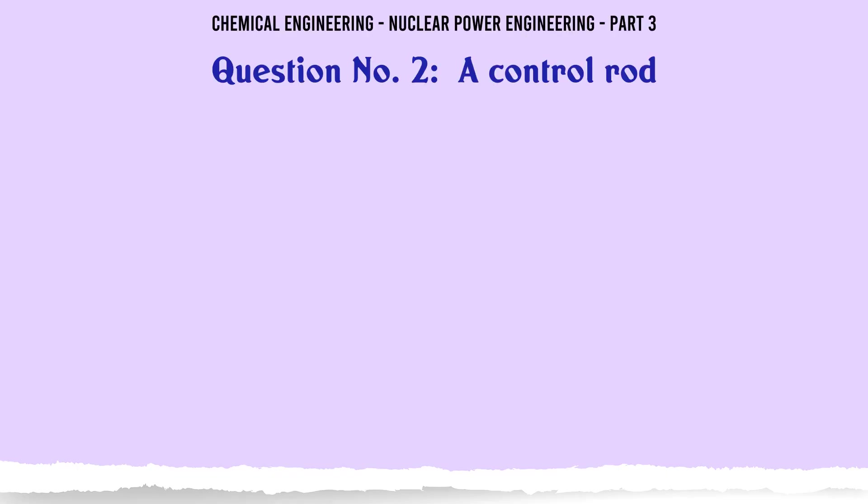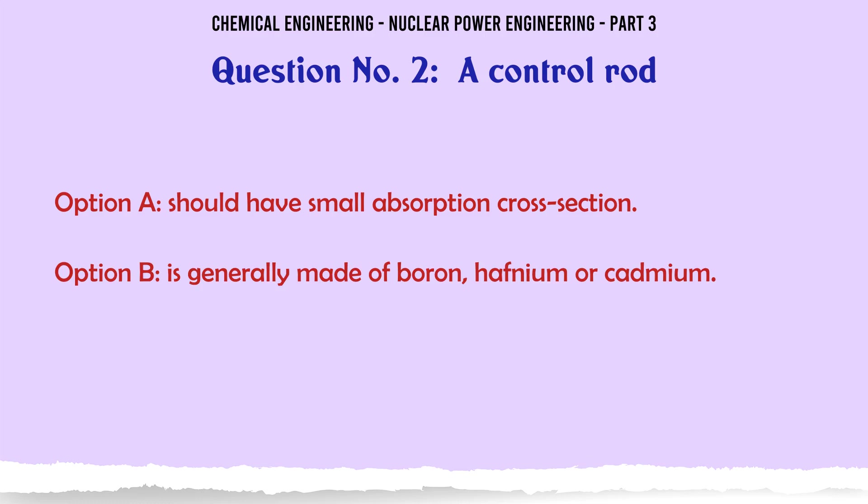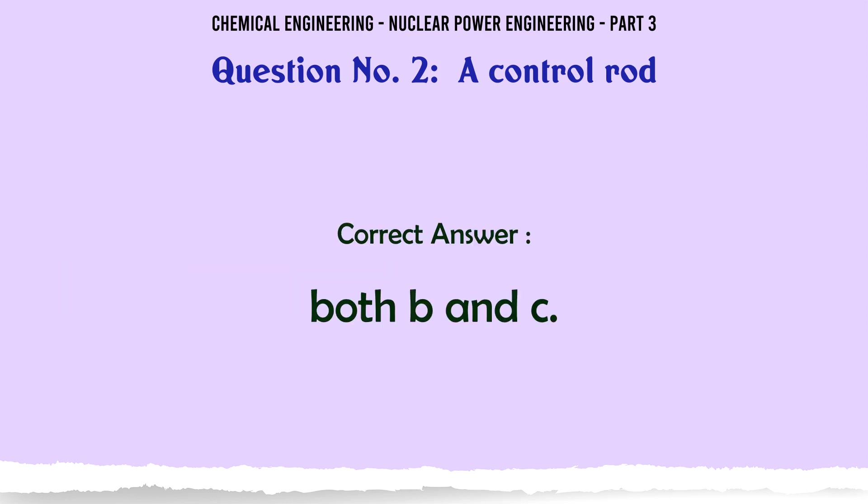A control rod is generally made of boron, hafnium, or cadmium, and should have large absorption cross-section. The correct answer is both B and C.